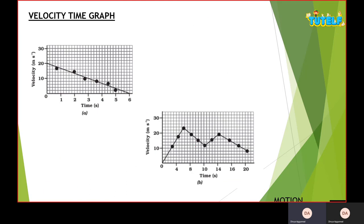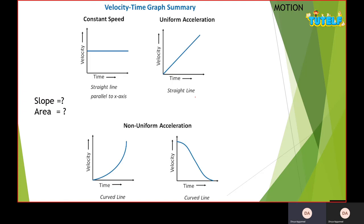If I had a graph like these — where the values are not fixed and are random — this is a non-uniform velocity graph. The velocity is not increasing in equal intervals or at a fixed rate.